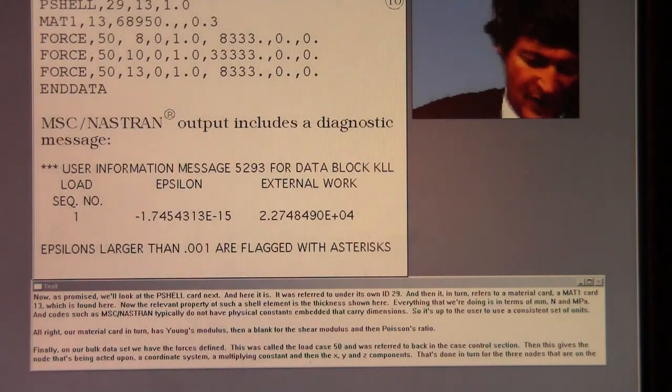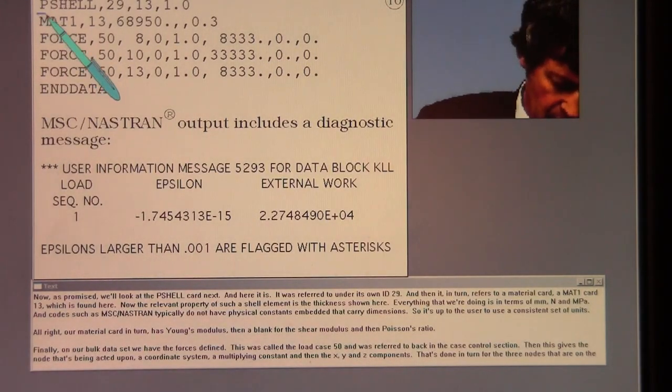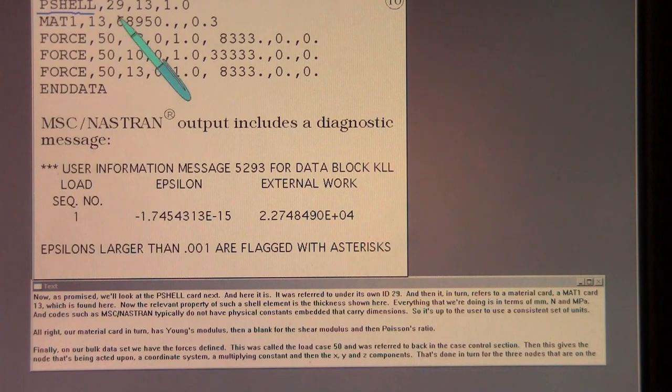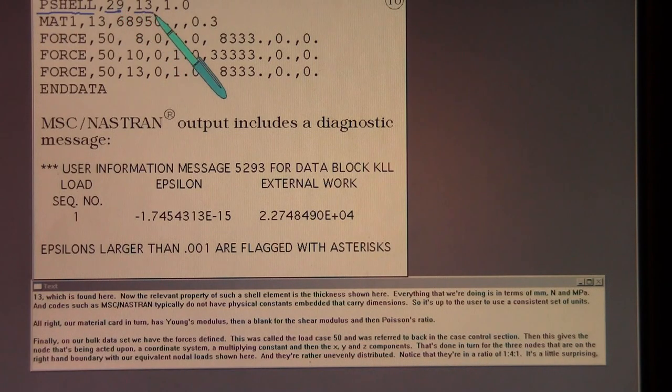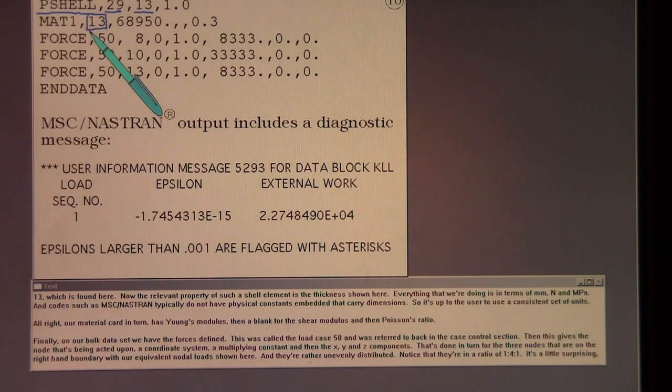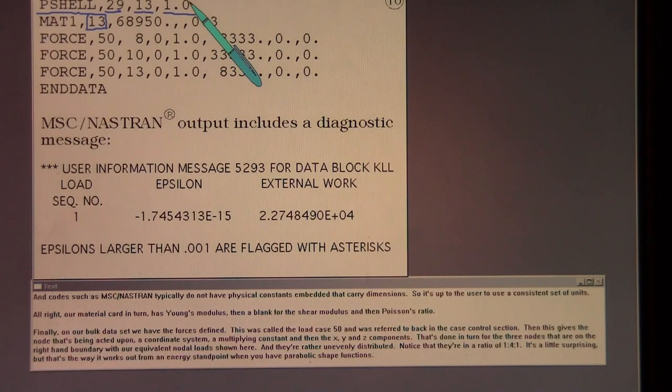Now as promised, we'll look at the P shell card next. And here it is, it was referred to under its own ID 29, and then it in turn refers to a material card, a MAT1 card 13, which is down here. Now the relevant property of such a shell element is the thickness, shown here.